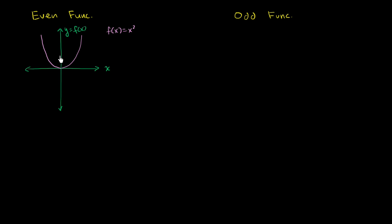f of x equals x squared is an even function. The way that you recognize it is because it has symmetry around the y-axis. If you take what's going on to the right of the y-axis and reflect it over the y-axis, you get the other side of the function. And that's what tells you it is an even function.